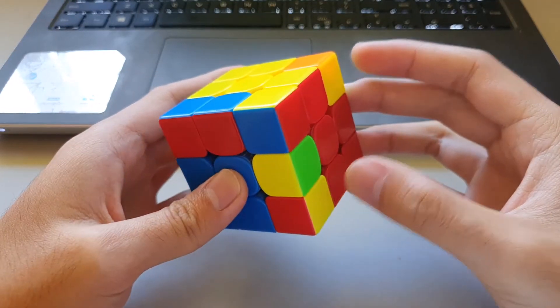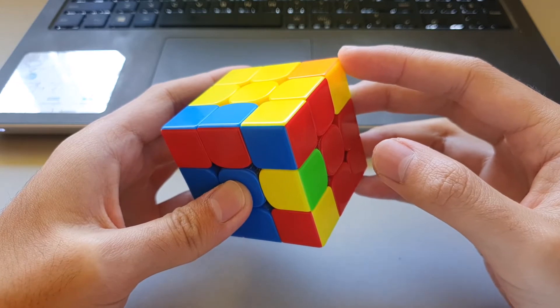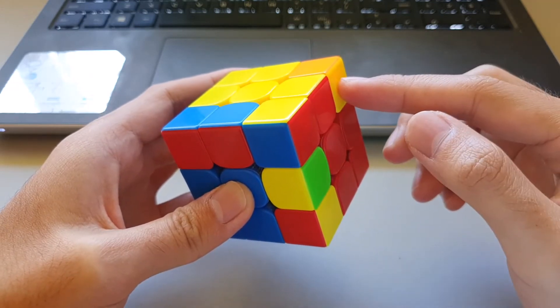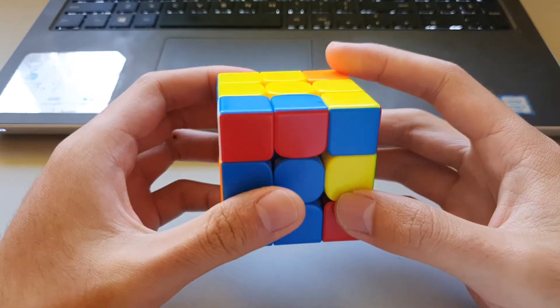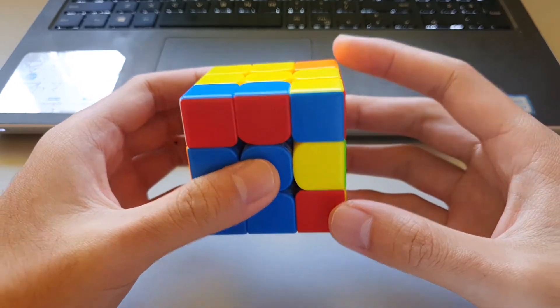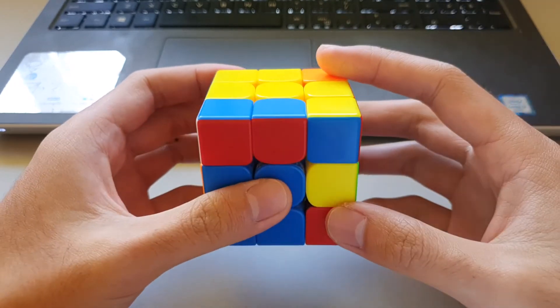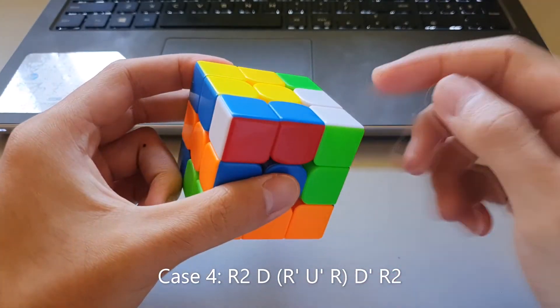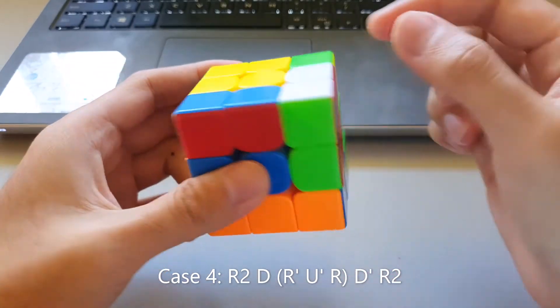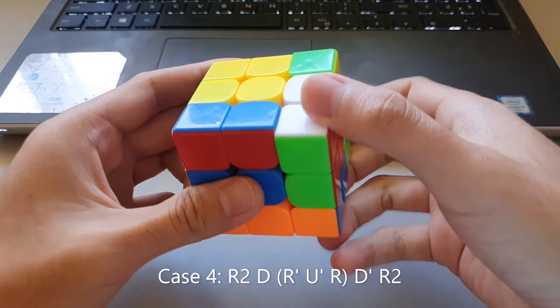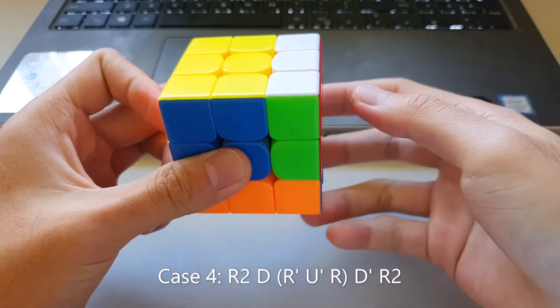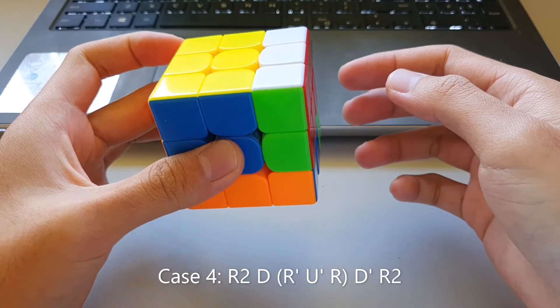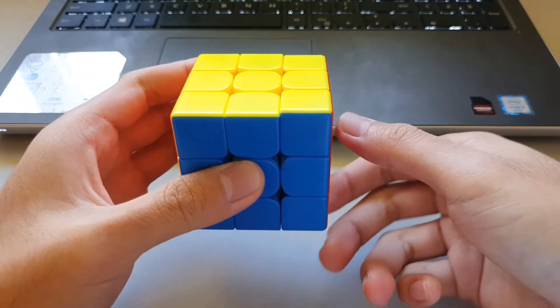So moving on to this case here, it's when the corner at the back is not oriented and the yellow sticker is facing towards the right. So rather interesting algorithm for this one but quite easy to remember as well. So it starts off with an R2D and then kind of imagine inserting this F2L pair into this position here like this and then undoing the setup moves. So D', R2.